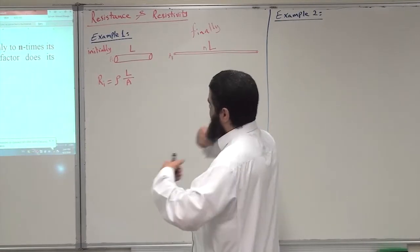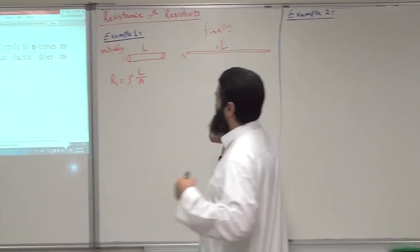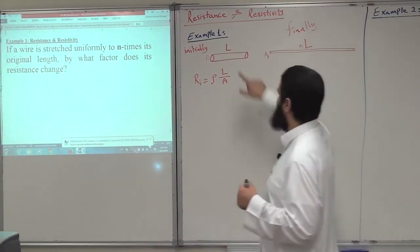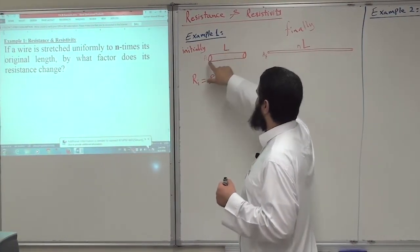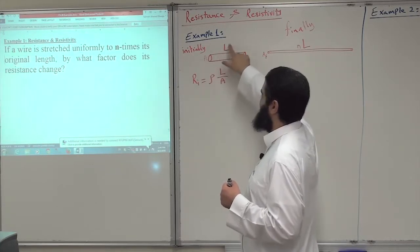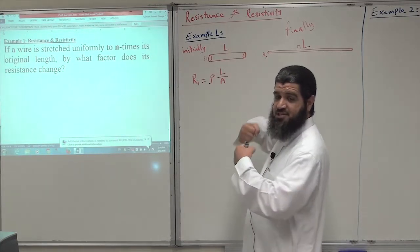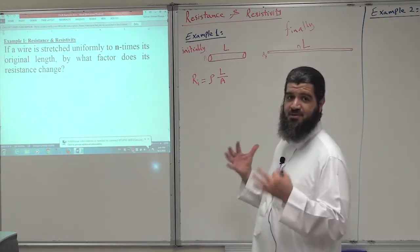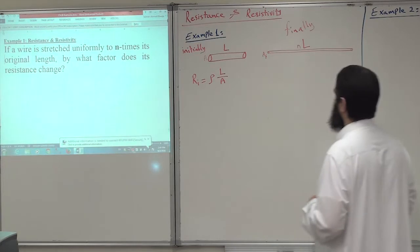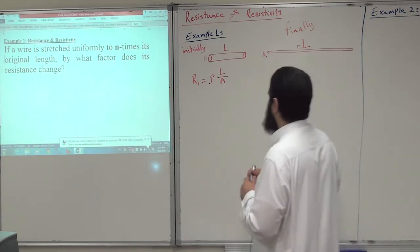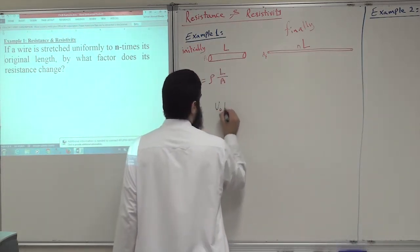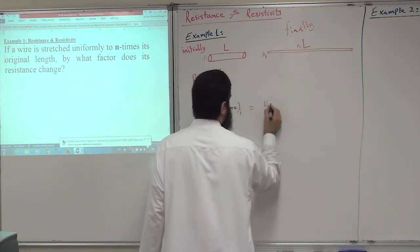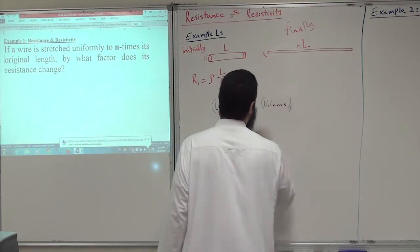By stretching the wire, the volume of the material doesn't change. The volume is just the cross-sectional area multiplied by the length. As you stretch it, the material is conserved — you don't lose material. So volume initially equals volume finally after stretching.